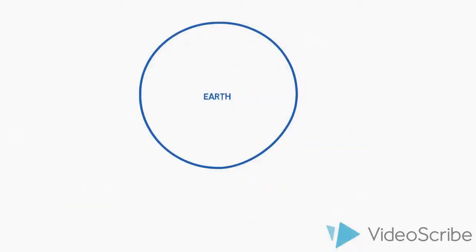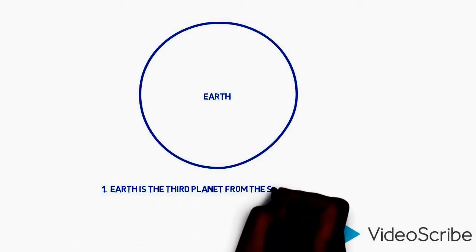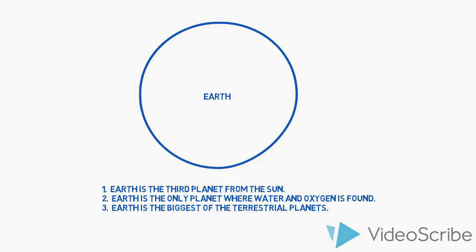Earth. Earth is the third planet from the Sun. Earth is the only planet where water and oxygen is found. Earth is the biggest of the terrestrial planets.